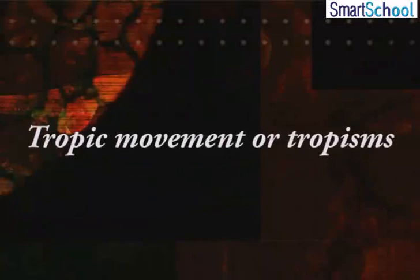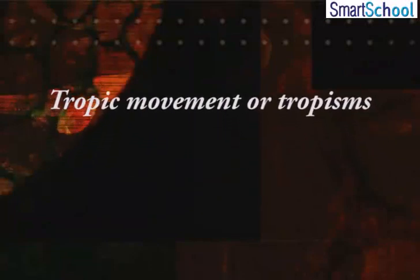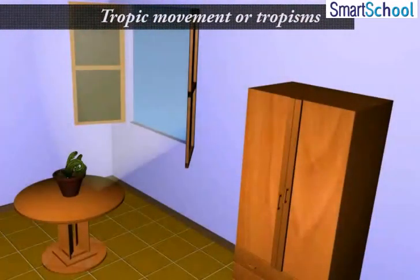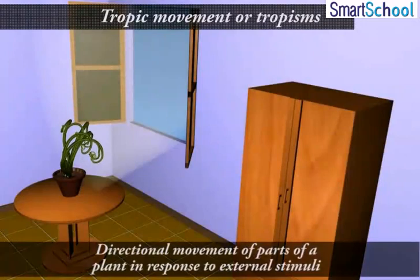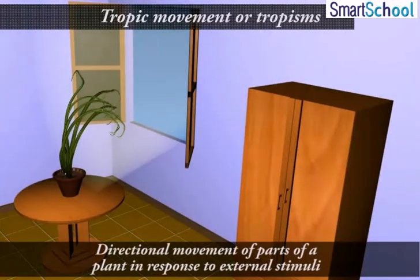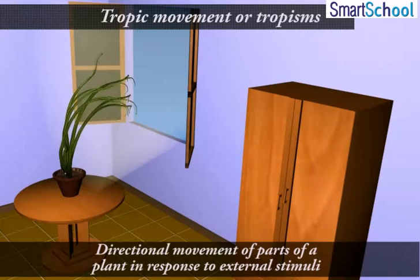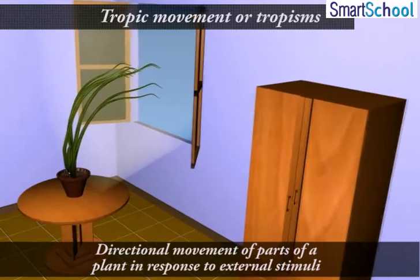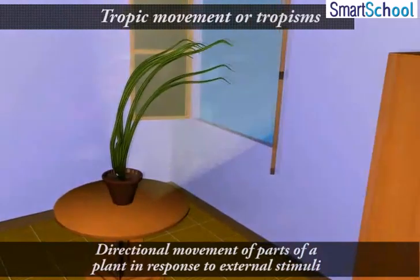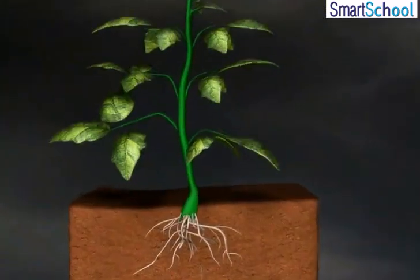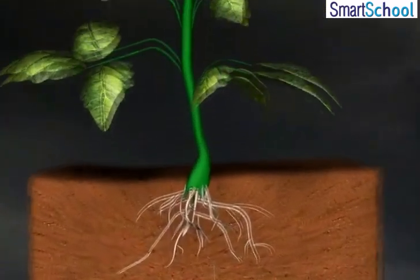Tropic Movement or Tropism: Tropic movements are the induced growth movements of curvature that occur due to differential growth. These are directional movements or orientations that occur in response to external stimuli such as light, force of gravity, chemicals, water, etc. Let us understand tropism in detail.